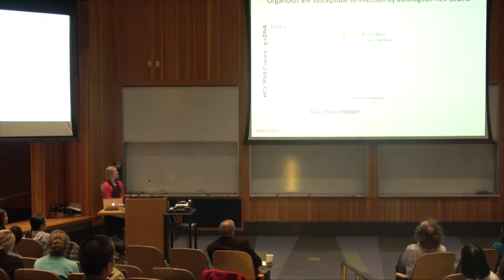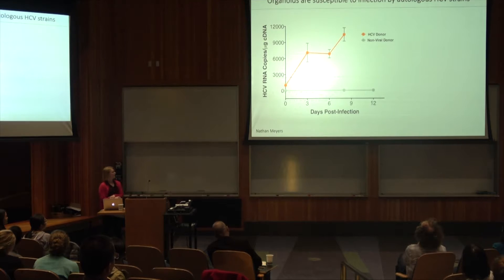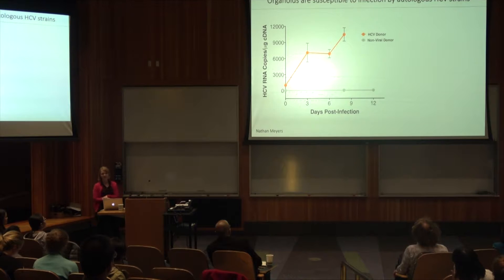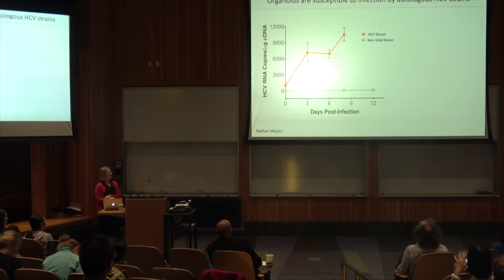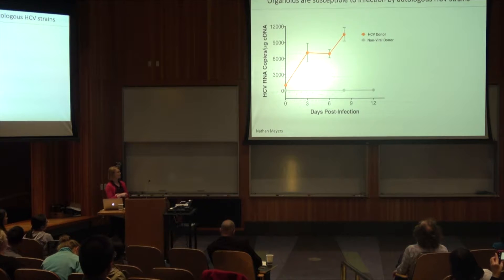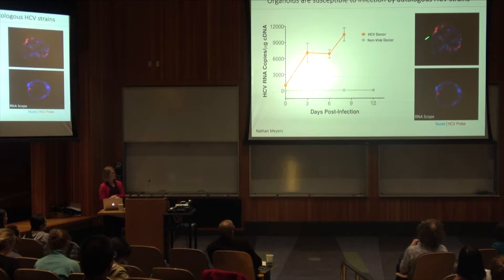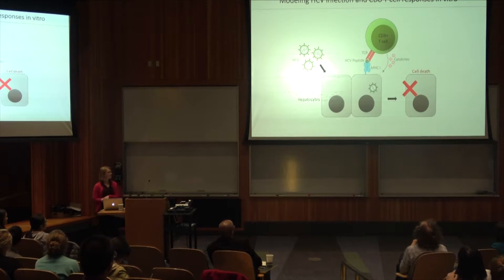And in fact, they are. Shown here in yellow is when we take liver organoids from an HCV donor, take serum that contains their own autologous HCV, and add them back into the organoids — you can see we get HCV RNA. Interestingly, if we take that same HCV strand from the serum and add it to liver organoids from a non-viral donor, we actually don't see any infection. So this is specific to the donor, both for the organoids and the virus. We're also able to see HCV infection by RNA scope, shown here with HCV in red. So we have our HCV infection model.